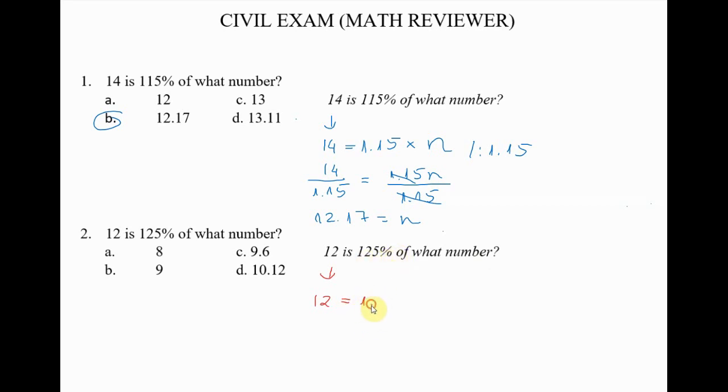'Of' is multiplication and 'what number' is n. We divide both sides with 1.25 and we have 12 divided by 1.25 is equal to 1.25 and divided by 1.25, we cancel this.